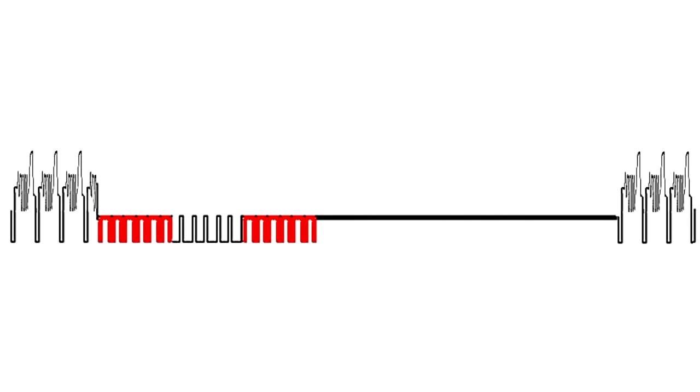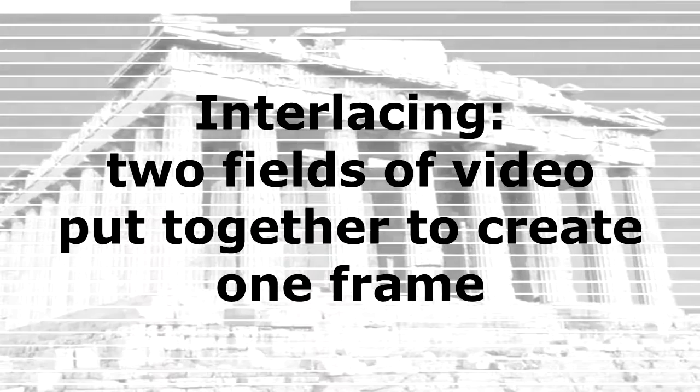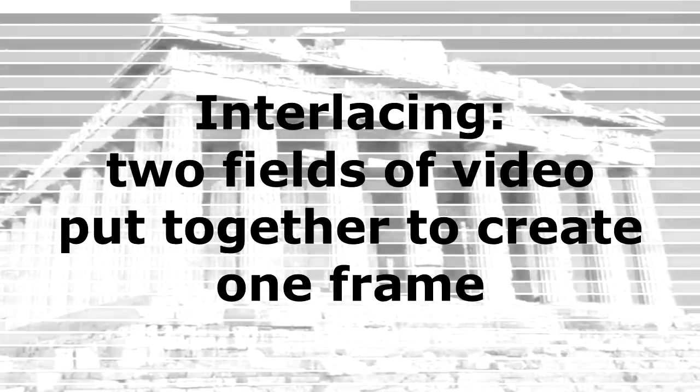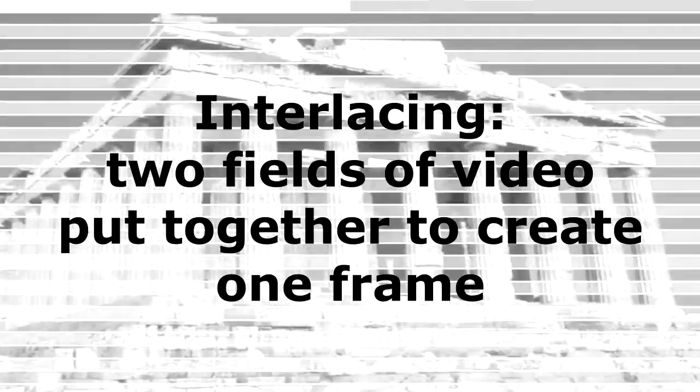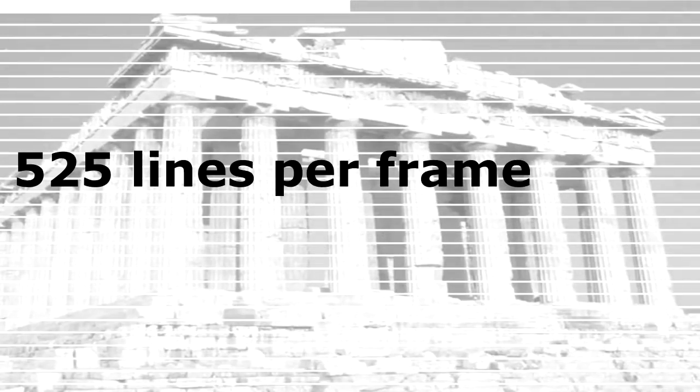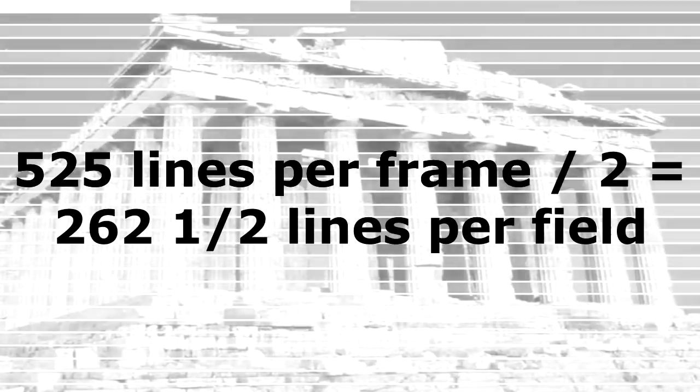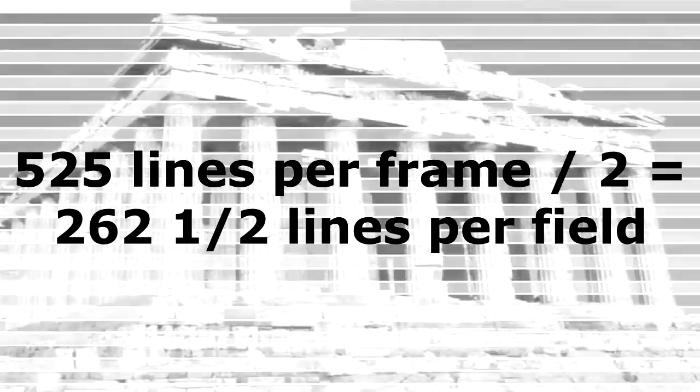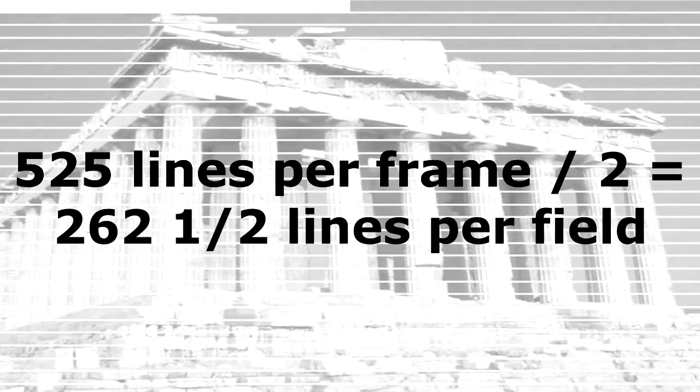In addition to the vertical sync pulse, another group of pulses is required when using interlaced scanning. Interlacing occurs because the second field of scanning starts half a line's distance across the screen relative to the first field. The analog television system has 525 total lines per frame. Therefore, each field has half that many, or 262 and a half. Since 525 doesn't divide evenly by two, this means that one field must begin one half line later than the other one.